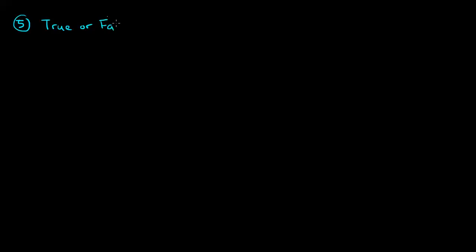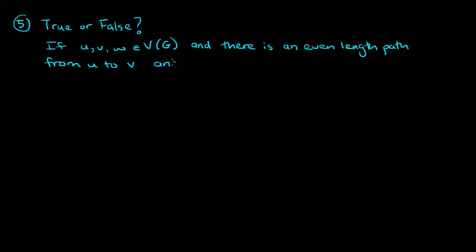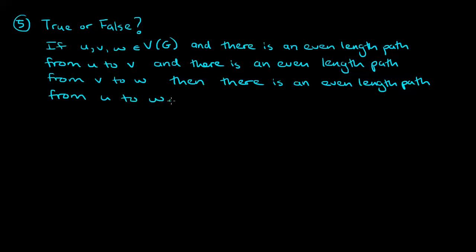Our last question is a true or false question. We need to determine whether the following statement is true or false: if u, v, and w are vertices of a graph, and there is an even length path from u to v, and there is also an even length path from v to w, then there is an even length path from u to w. If you believe the statement, you need a proof; if you don't, you need a counterexample — an example that satisfies the conditions but does not satisfy the conclusion.